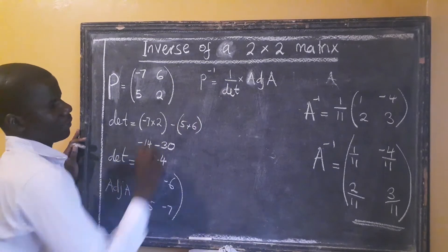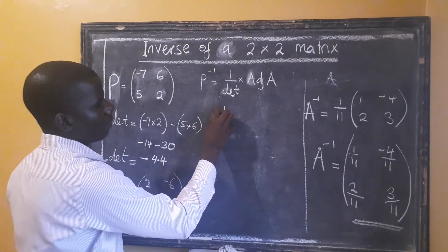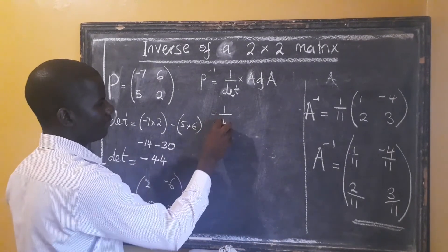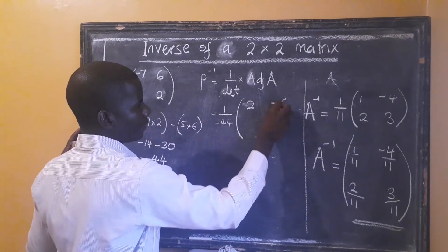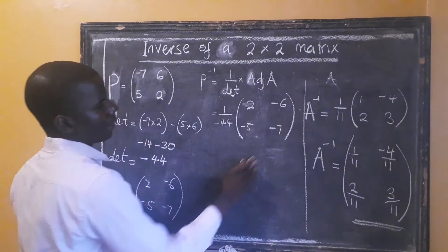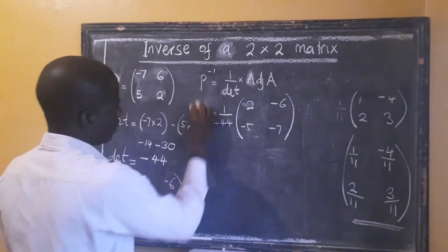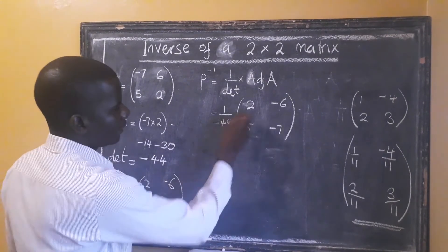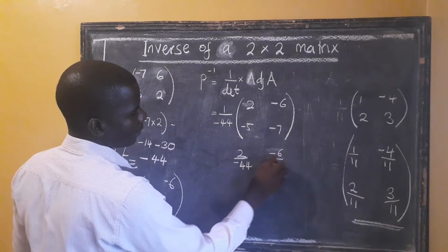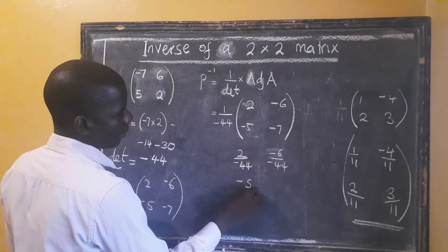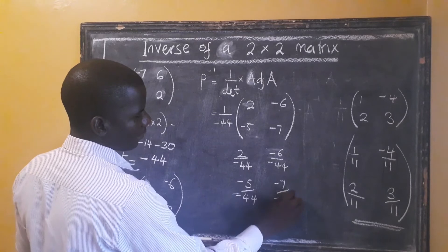Remember our formula — this is not the final answer yet. We need to come back and apply it. So the inverse is 1 over the determinant, which is negative 44, multiplied by the adjoint, which is: 2, negative 6, negative 5, negative 7. We can go further and distribute: 2 over negative 44, negative 6 over negative 44, negative 5 over negative 44, and negative 7 over negative 44.